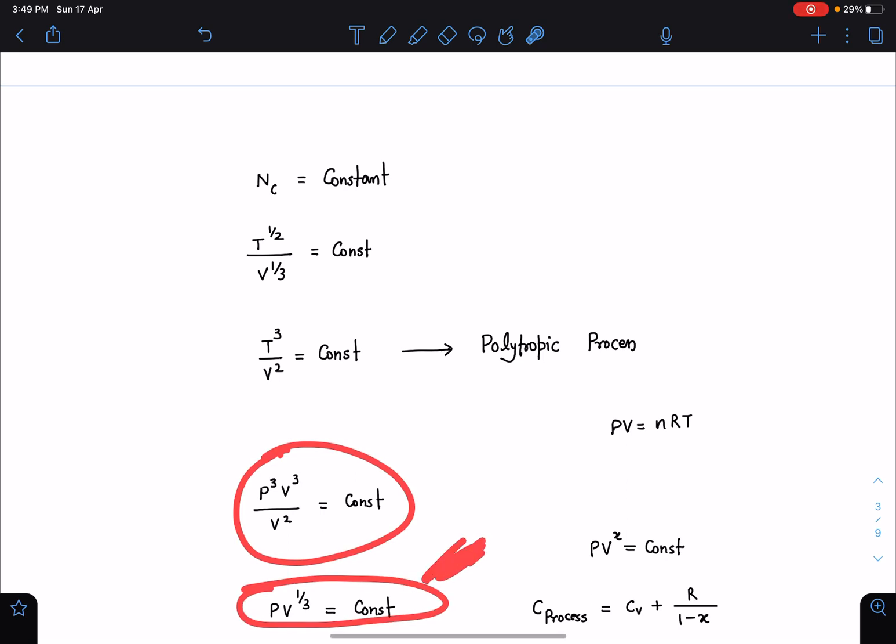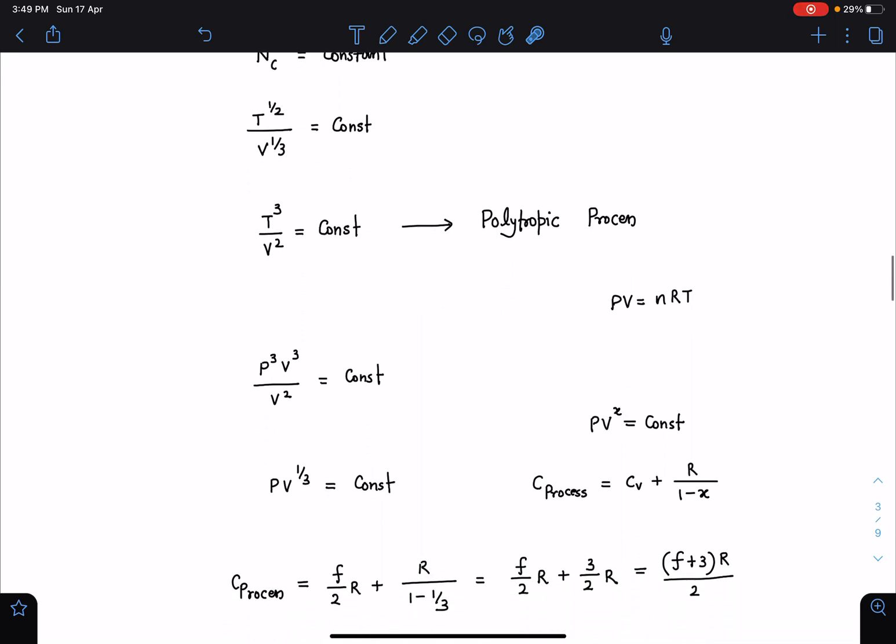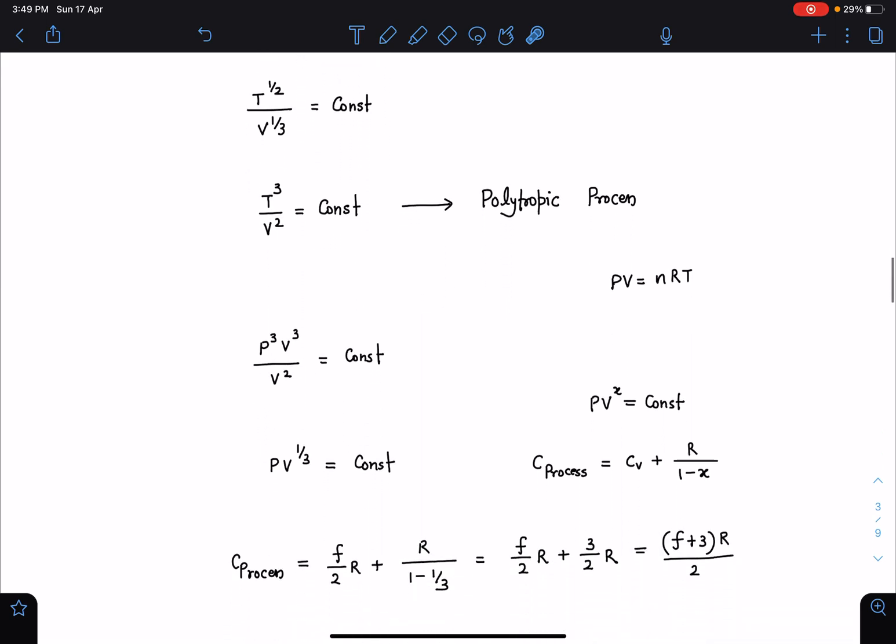From here you can further simplify. This is the standard case, and for this type of process C process is C_v plus R by 1 minus x. So here when I substitute the values, C process is C_v which is f/2 R, and R by 1 minus 1/3, so this will give us (f + 3)/2 times R.